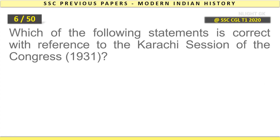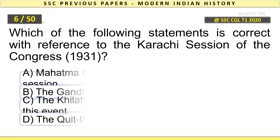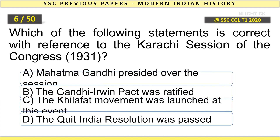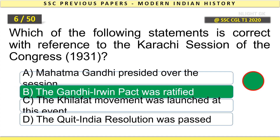Which of the following statements is correct with reference to the Karachi session of the Congress, 1931? The Gandhi-Irwin Pact was ratified.